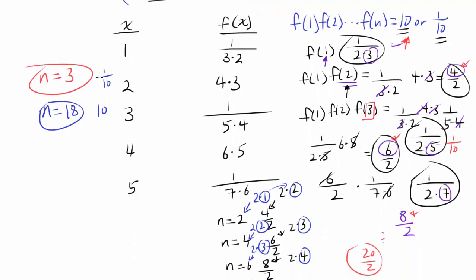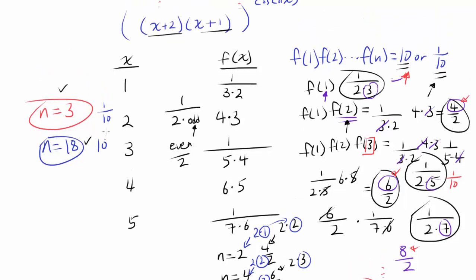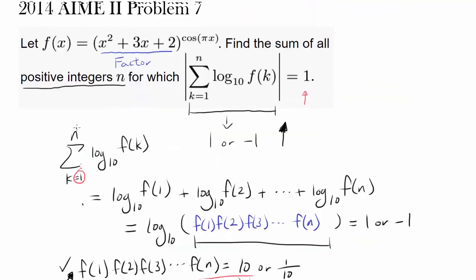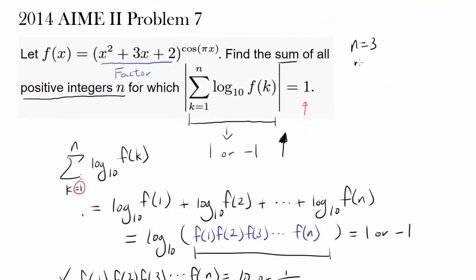These are the only two values that work. For odd values of n, you get 1 over 2 times some odd number — once past 1 tenth, it keeps getting smaller and never returns to 1 tenth. For even values of n, you get some even number divided by 2 — once past 10, it increases to 22 over 2, 24 over 2, and never returns to 10. So the only valid values are n equals 3 and n equals 18. The sum of all positive integers n satisfying the condition is 3 plus 18, giving a final answer of 21.